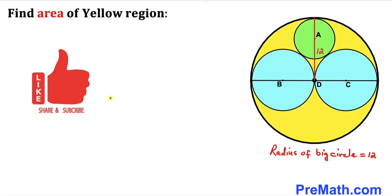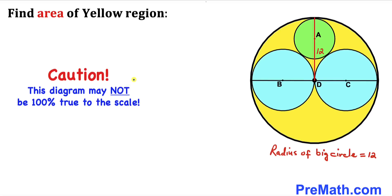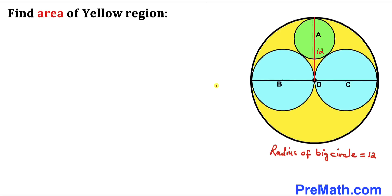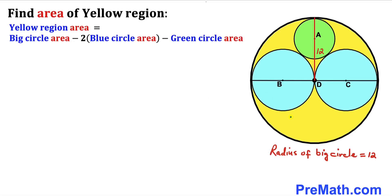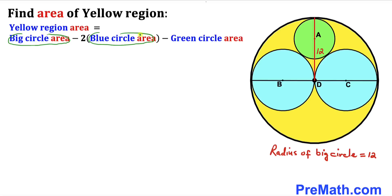Please don't forget to give a thumbs up and subscribe. Please keep in mind that this figure may not be 100% true to scale. The area of this yellow shaded region is going to be equal to the area of the big circle minus the area of the two blue circles as well as the green circle. So we are going to calculate the area of the big circle, the area of the blue circles, and the area of the green circle.